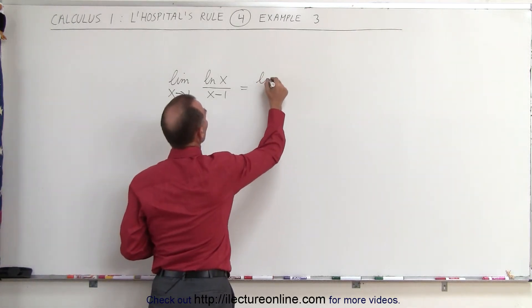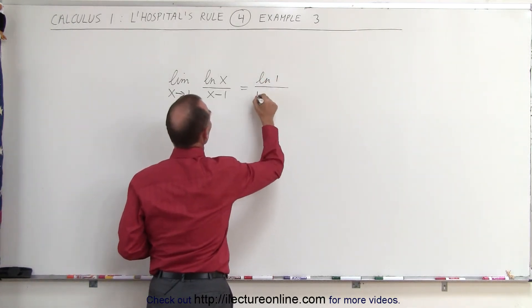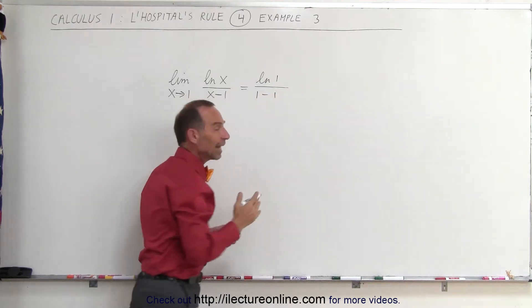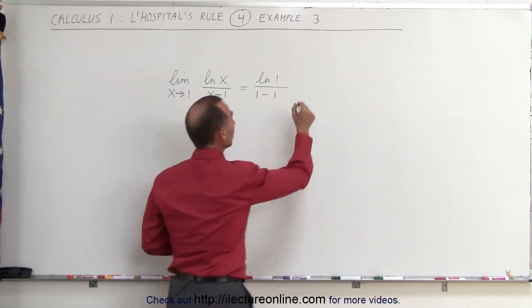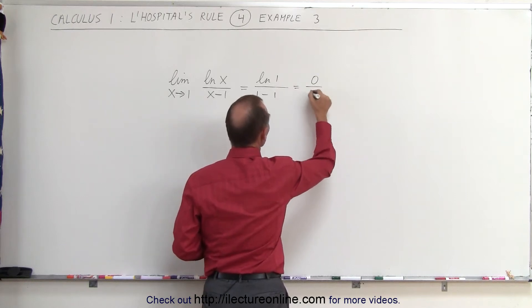So this would be equal to the natural log of 1 divided by 1 minus 1. And of course the natural log of 1 is equal to 0. So this is equal to 0 divided by 1 minus 1 is 0.